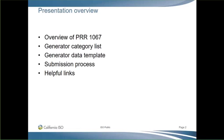We set up this webinar so that we can help participating generators understand the data that's required and also help them with the submission process to allow for a more streamlined process. Right now we have the outline of the presentation up. We'll give a quick overview of the PRR. We'll talk about the two spreadsheets posted on the ISO website which are critical for understanding and completing the submission process. We'll also discuss the submission process itself and go through a sample of a filled-out data sheet to help people understand what data is required and how to fill it out.